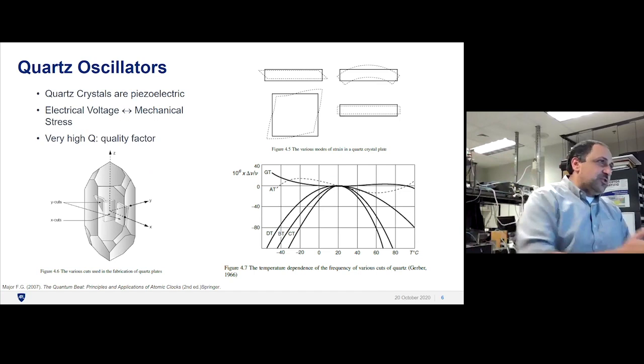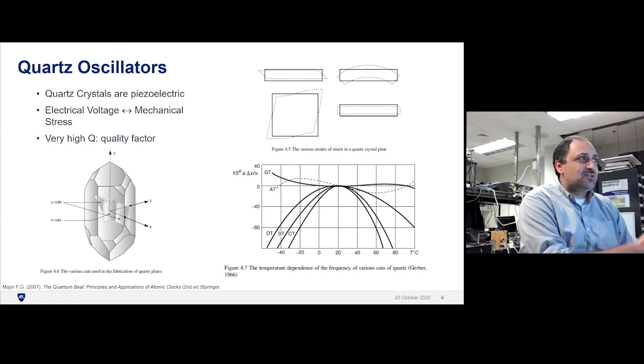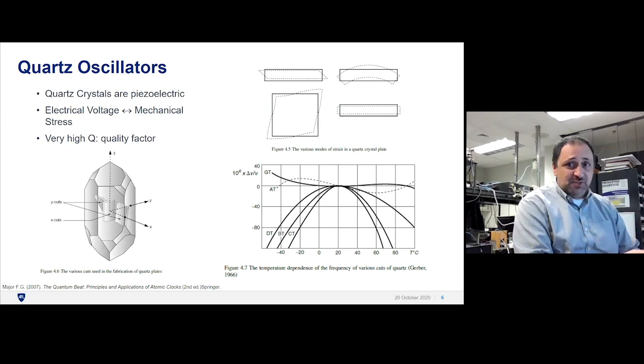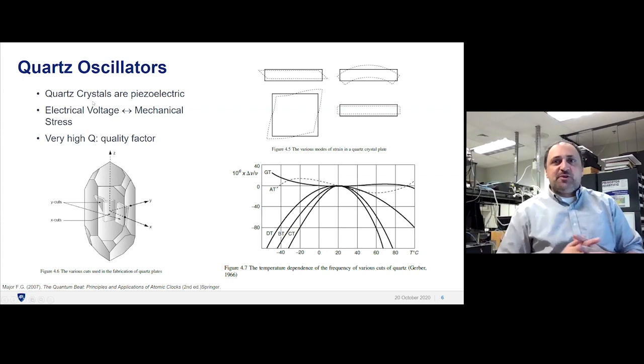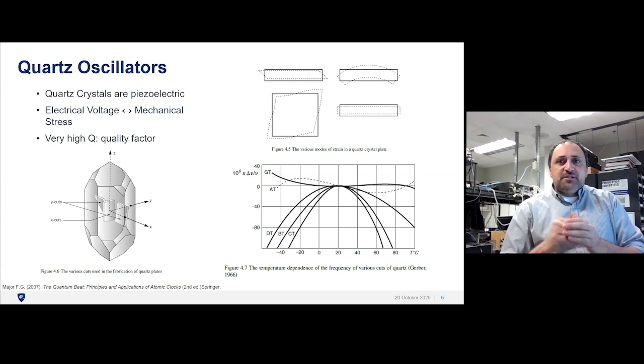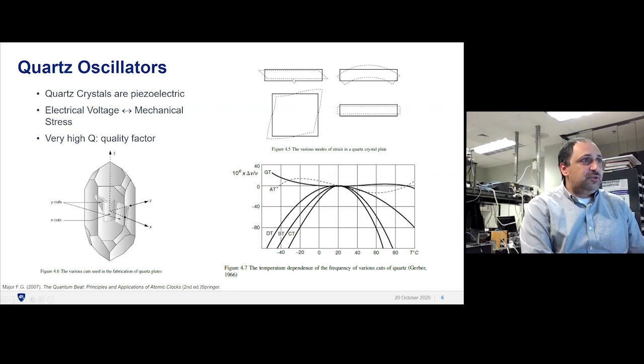A quartz oscillator is still relevant for atomic clocks. How does it work? Quartz crystals are piezoelectric. What that means is if you apply a voltage to it, it'll oscillate mechanically, it'll vibrate. And if you put pressure on it and force it to vibrate, it'll give you an electrical signal, a voltage.